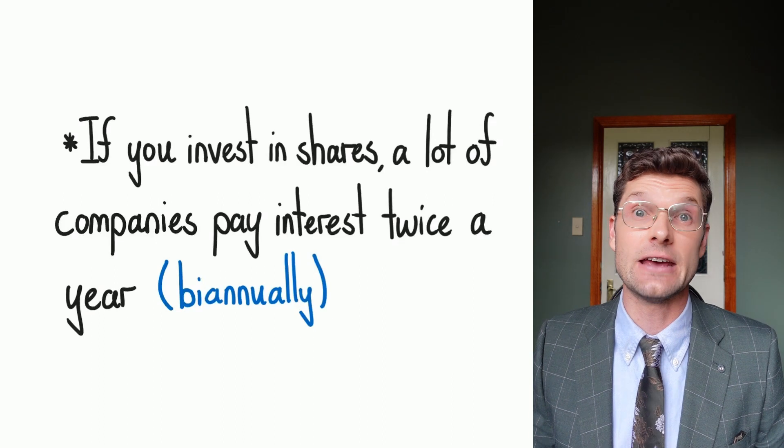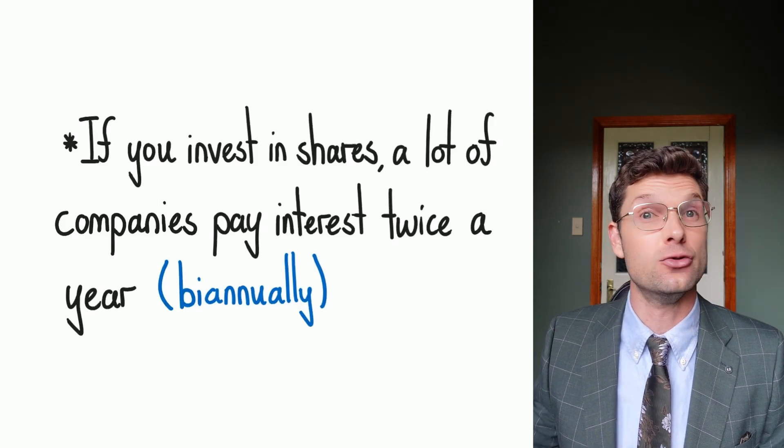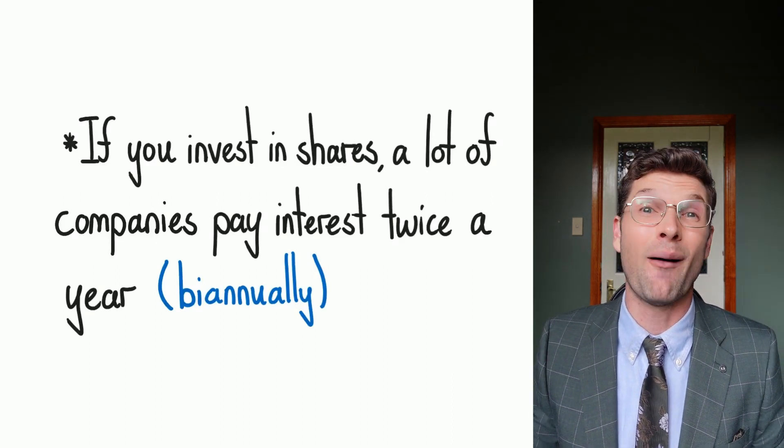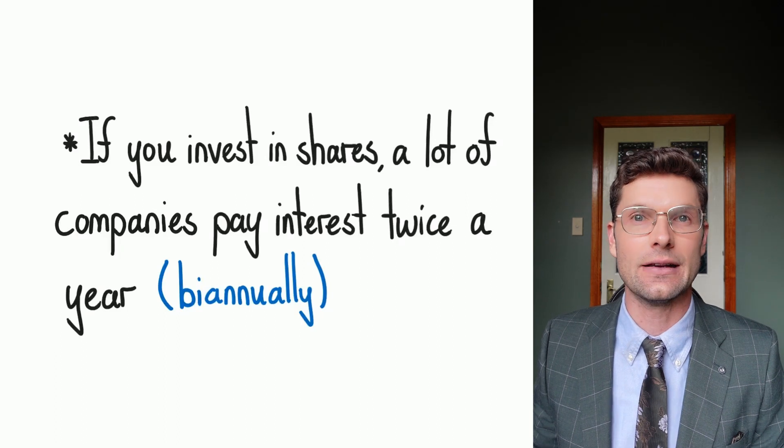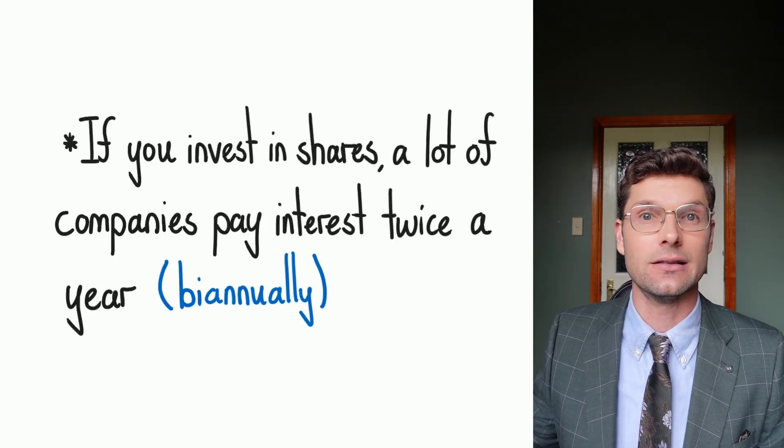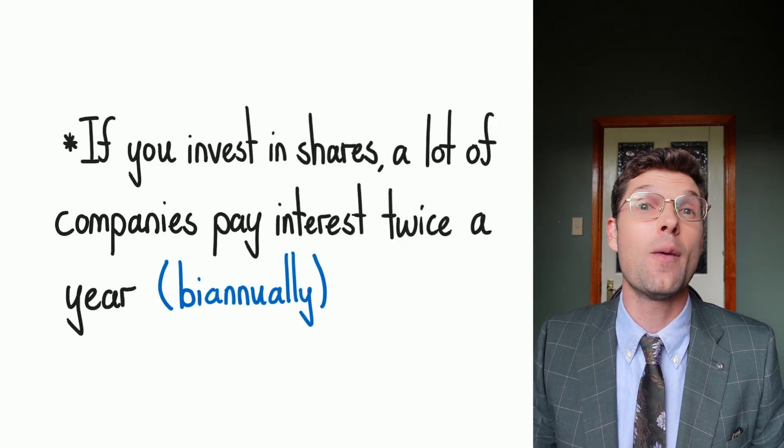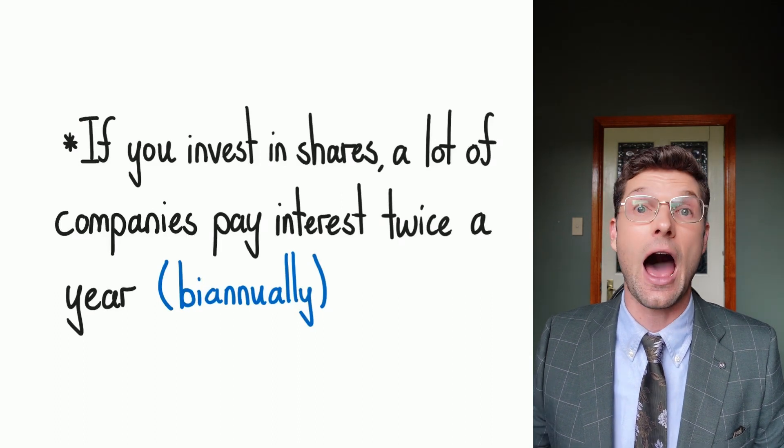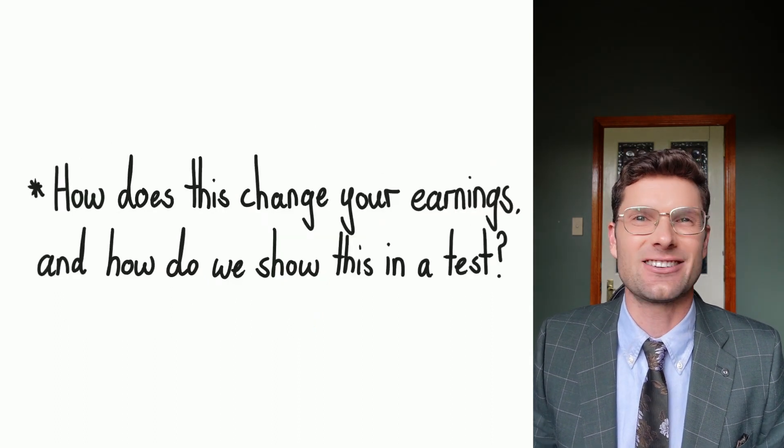A really common example is if you buy shares from a company, they might pay you dividends or pay you interest biannually or even quarterly. So instead of getting one big lump sum at the end of the year, you might get two smaller sums halfway through the year. But how does this actually change your earnings?